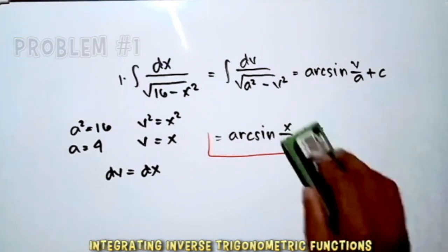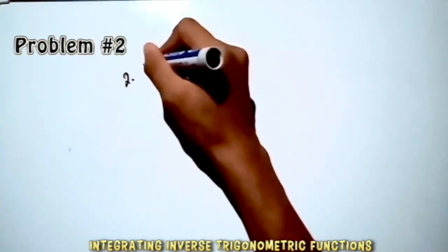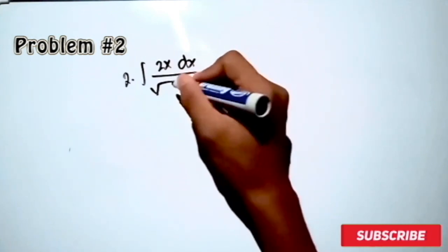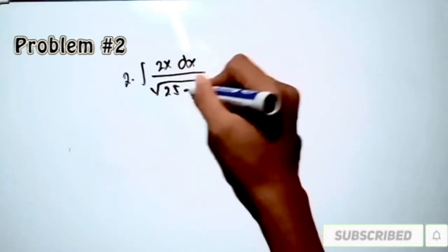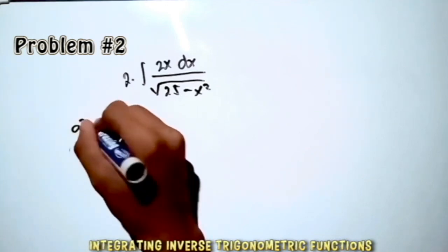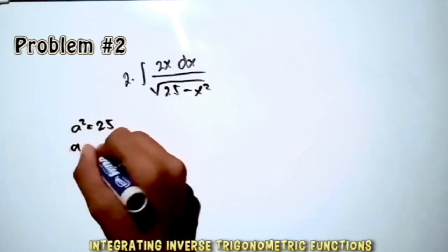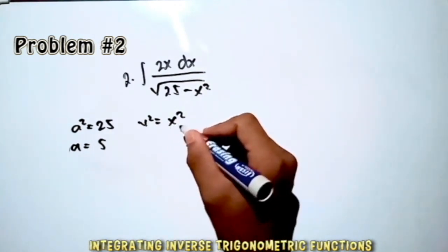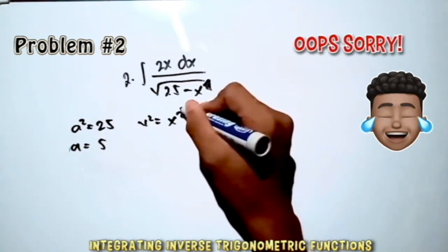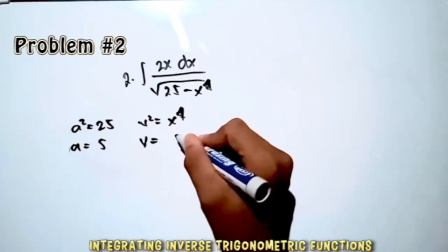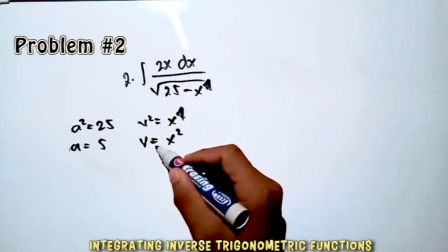Let's proceed to the second example: integrate 2x dx over the square root of 25 minus x⁴. Again, this looks like the arcsin formula. So a² = 25, and a = 5. And v² = x⁴, so v = x².